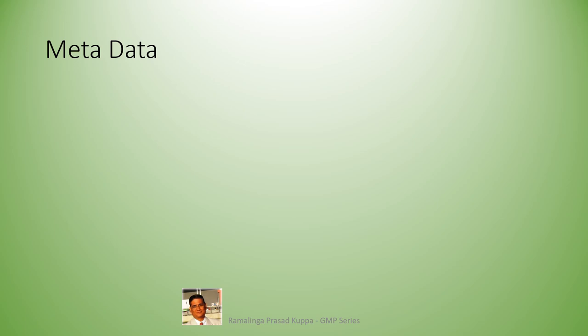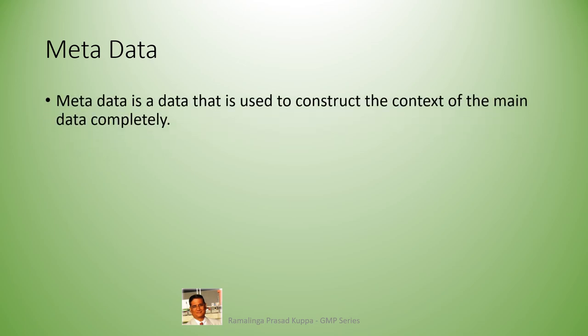Let us see what is metadata. Metadata is the data that is used to construct the context of the main data completely. Without metadata, the final data is incomplete. Metadata describes the data — how data is generated, who generated it, when and why it was generated.